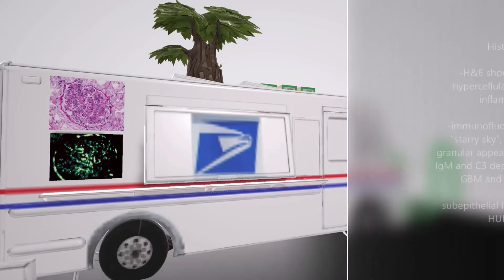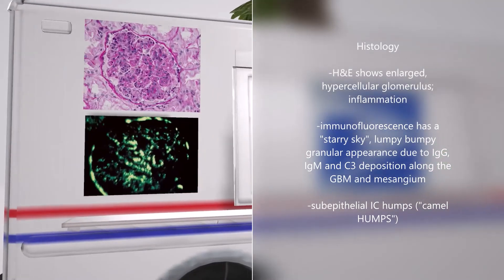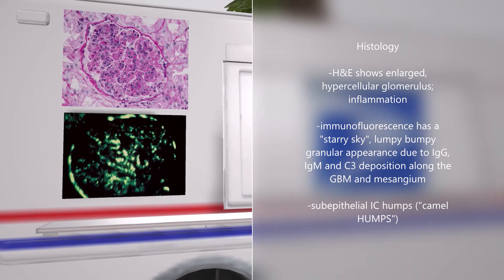It's the immune complex deposition that leads to the histology we see. On the side of his truck we conveniently see the histologic pictures of acute post-streptococcal glomerulonephritis. On the H&E we see the classic enlarged and hypercellular glomerulus. This inflammation is mediated by the immune complex deposition. On immunofluorescence we see the classic starry sky appearance — the granular appearance — again due to immune complex deposition.